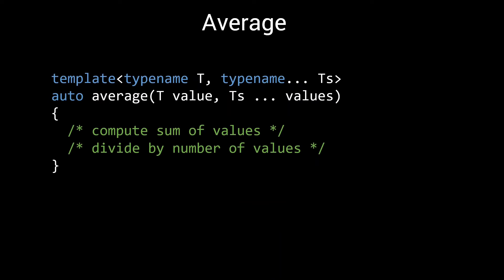Computing the average of a set of inputs is a common operation that is usually executed in two steps. If you want to support a mix of different types, a variadic template like this one is a good option.